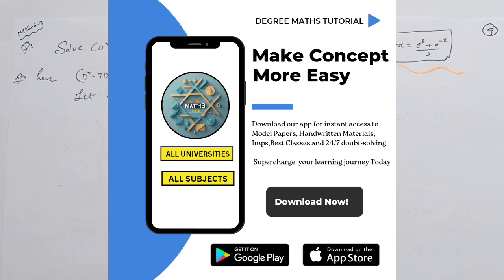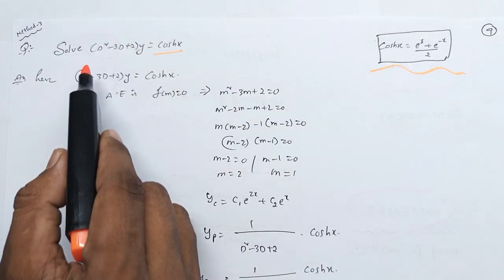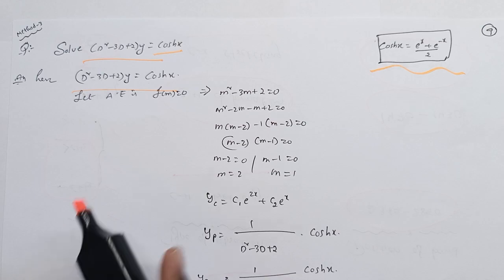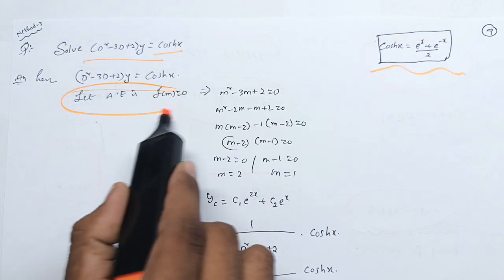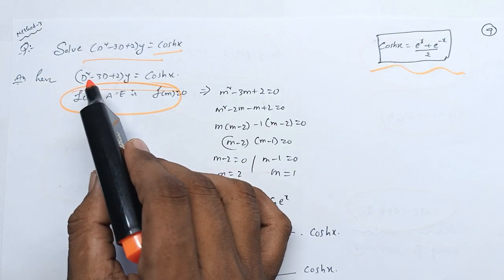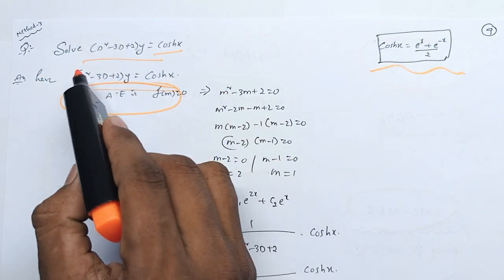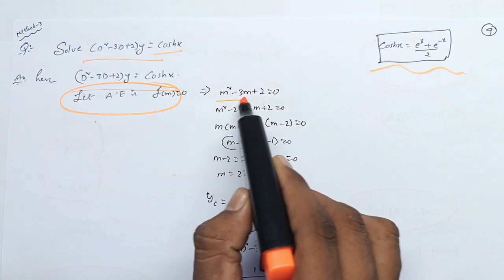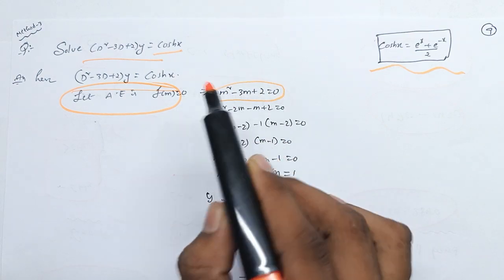The video links will be checked in the class. So, how do you solve it? It's very interesting. It's an auxiliary equation. So, D is m. m squared minus 3m plus 2 is equal to 0.